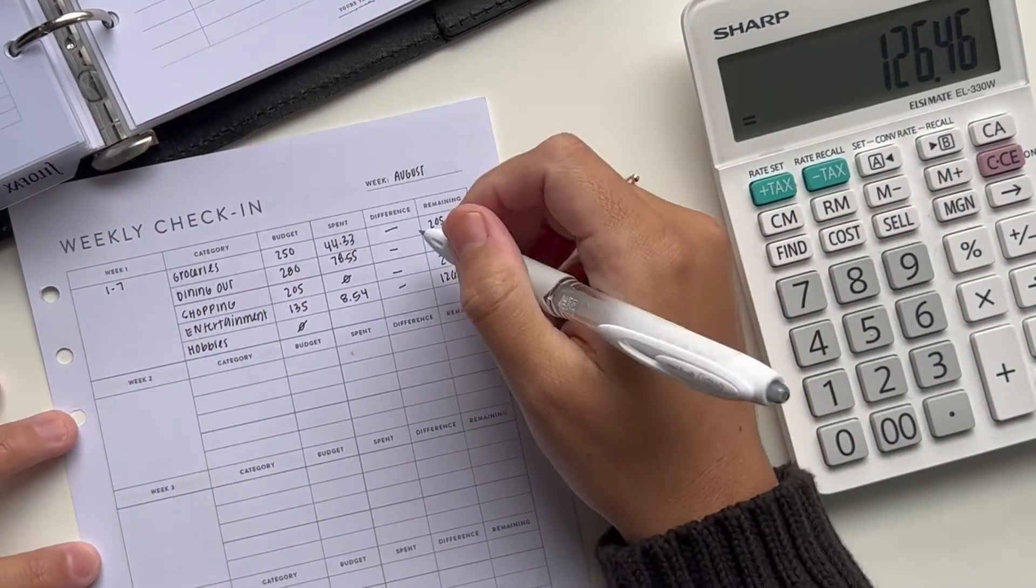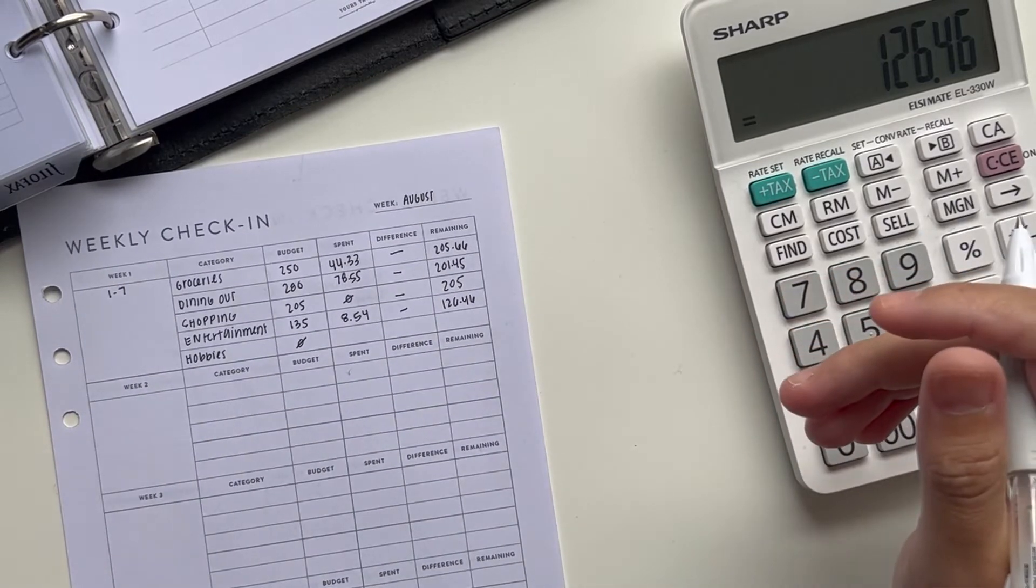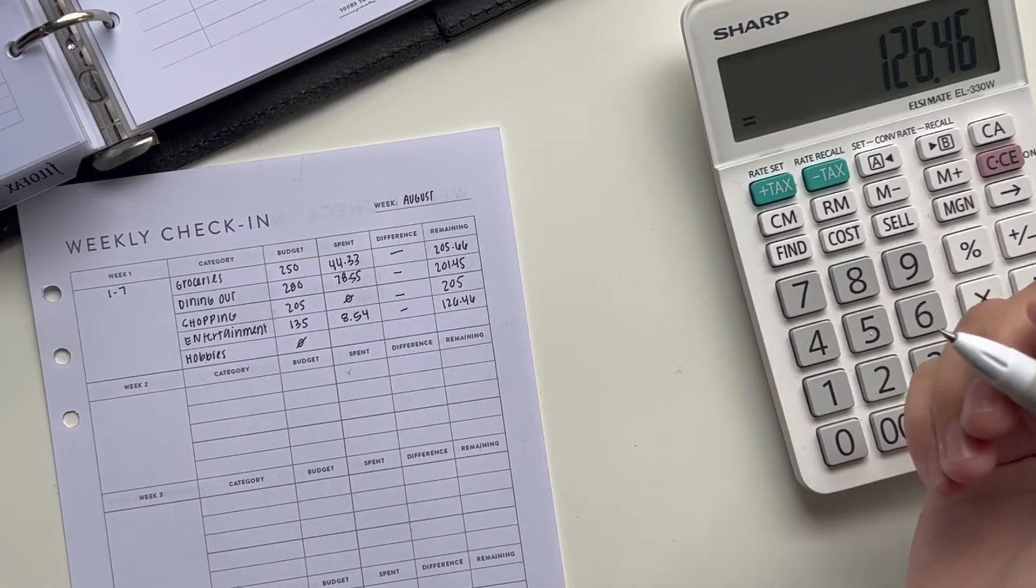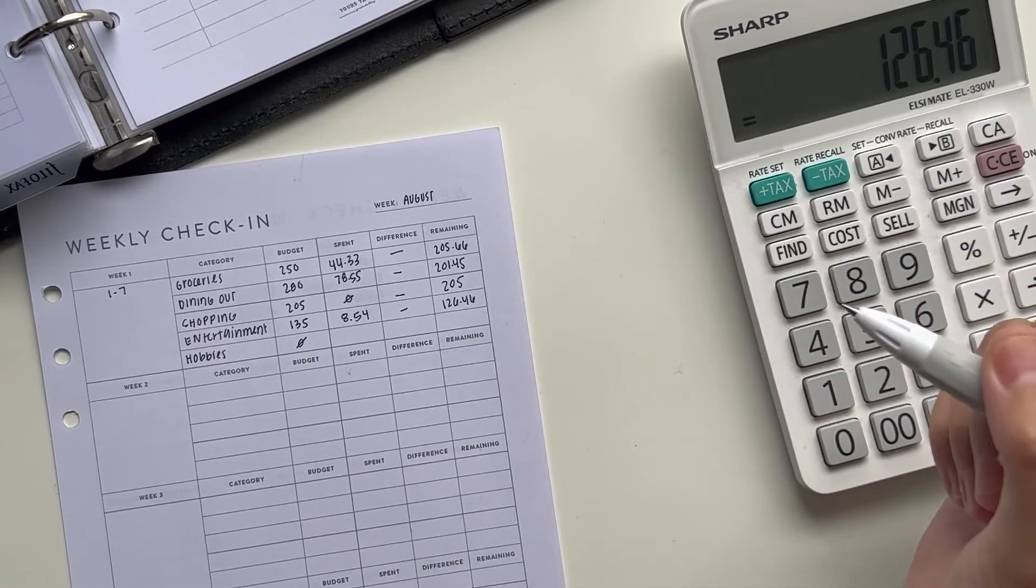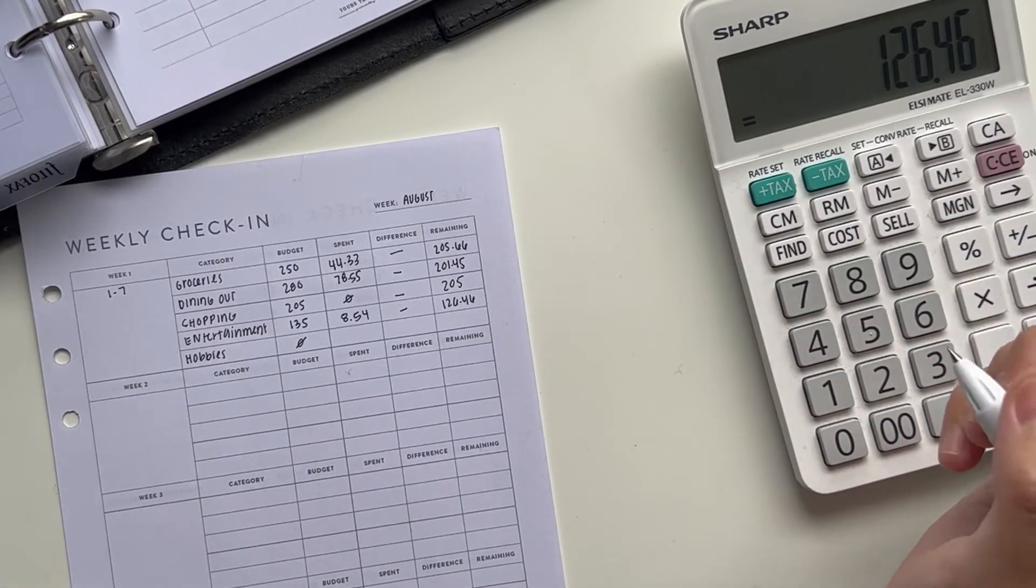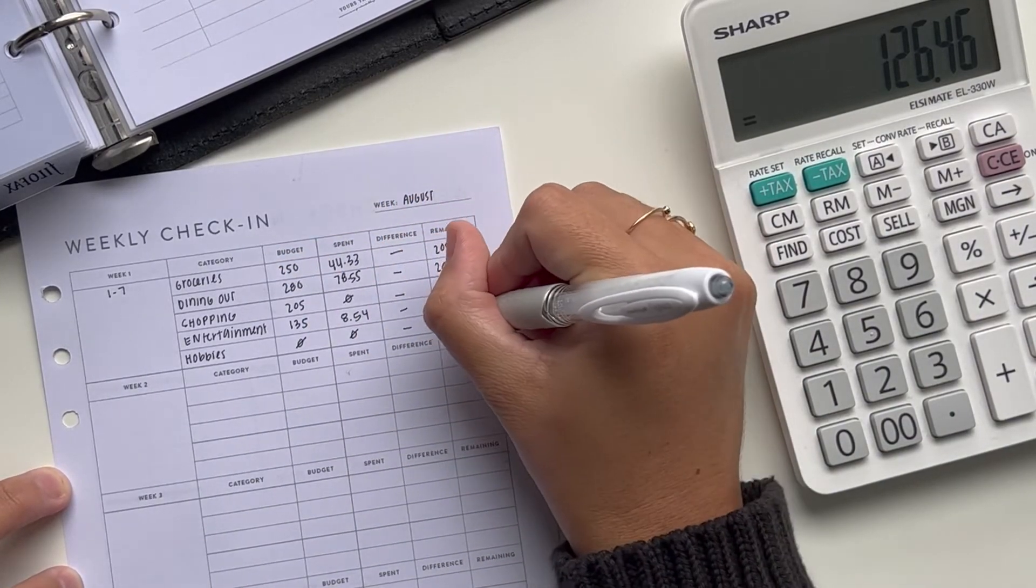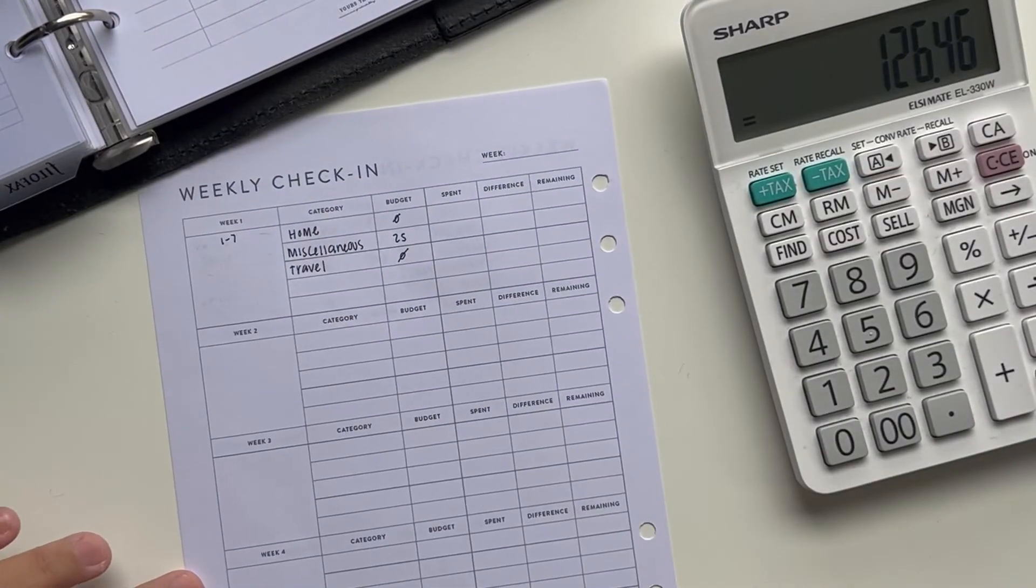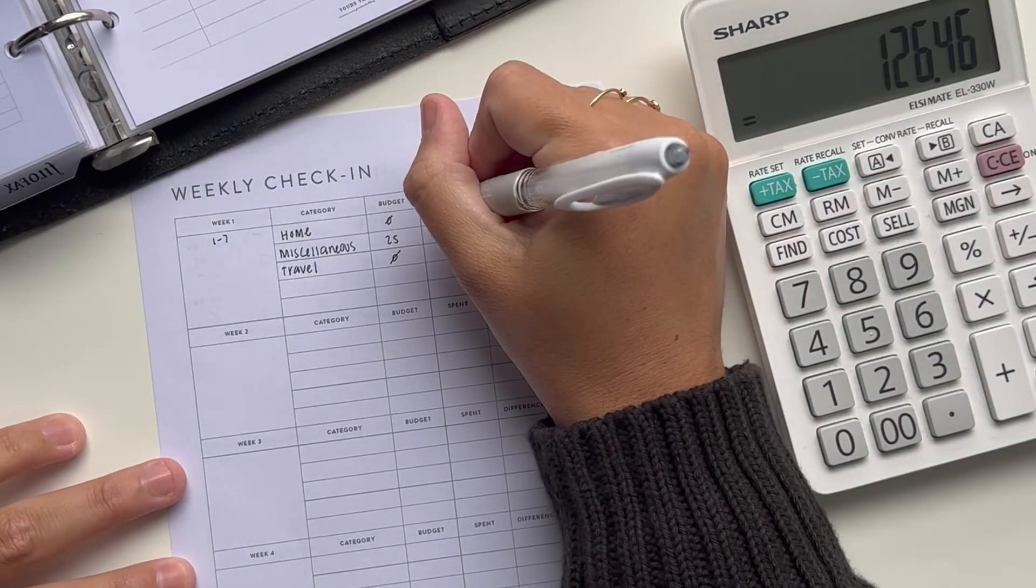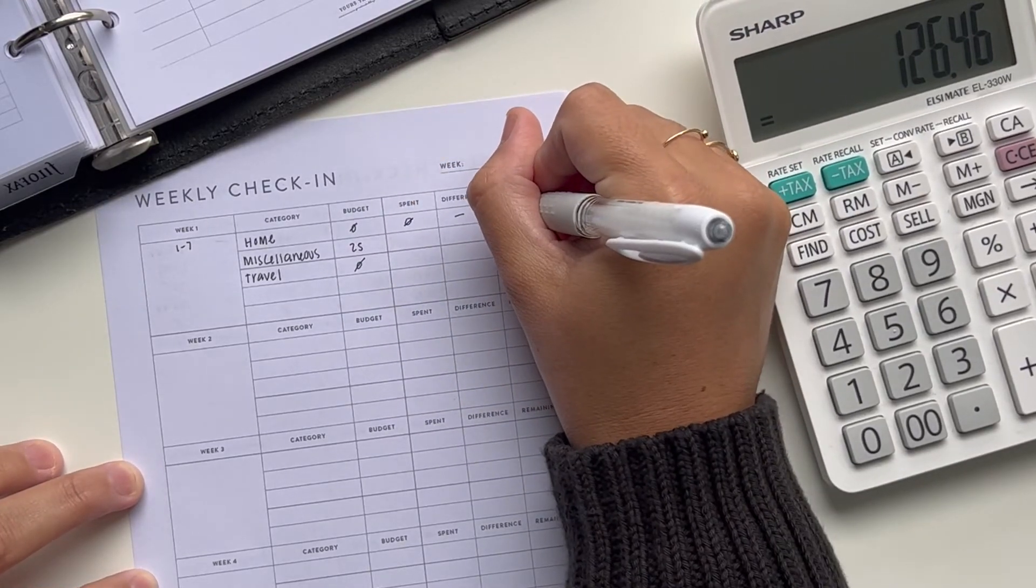Hobbies, I didn't budget anything. I'm trying not to spend anything in hobbies and home because of a spendier month in shopping and entertainment. And this week, I haven't purchased anything, so that's good. One week down. Home is the same scenario. I didn't spend anything, didn't budget anything, so we're good there.